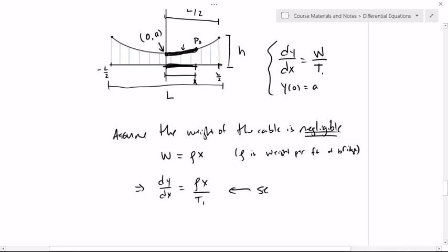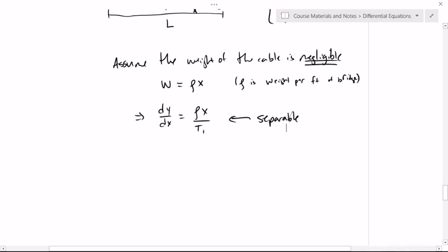In fact, it's the simplest of all because you only have an independent variable on the right-hand side. So you have the integral dy equals the integral of rho over t1 x dx. So I just multiplied this across and integrated both sides. In doing that, I end up with y is equal to rho x squared over 2 t1 plus c.